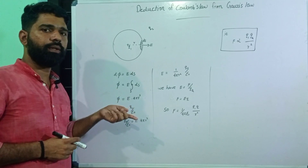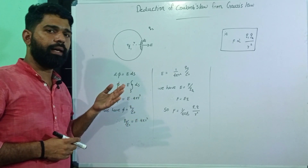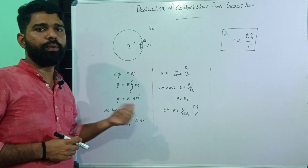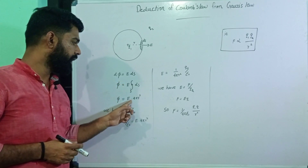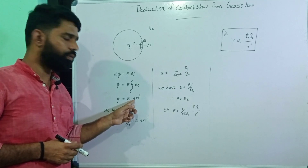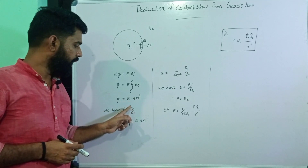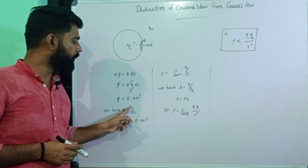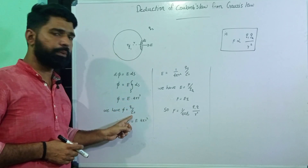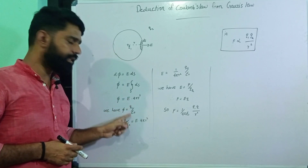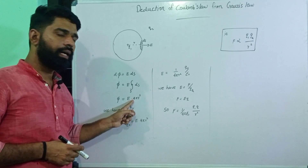Applying Gauss's law, the total flux equals q1 divided by epsilon-naught. So q1 by epsilon-naught is equal to E times 4πr².